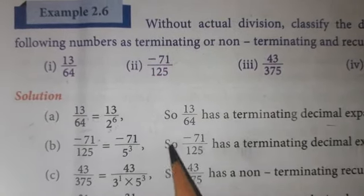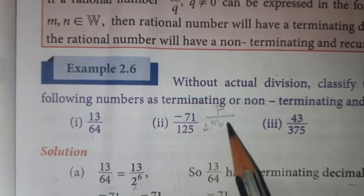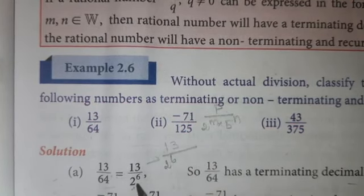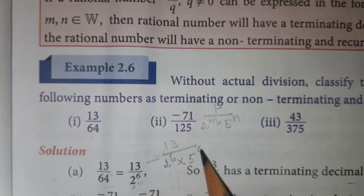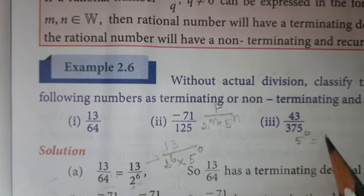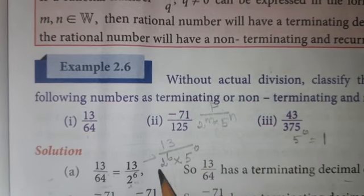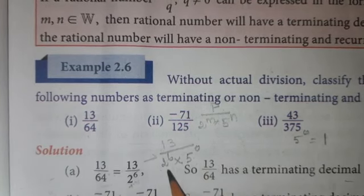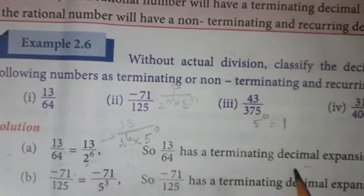Our format is p divided by 2 power m into 5 power n. So we write 13 divided by 2 power 6. Here, 5 value is not present, so we can write 5 power 0. Anything power 0 value is 1. So we can write 5 power 0, and 1 into 2 power 6 gives 2 power 6. Now you have the format with 2 power something and 5 power something. Therefore, 13 divided by 64 has a terminating decimal expansion.